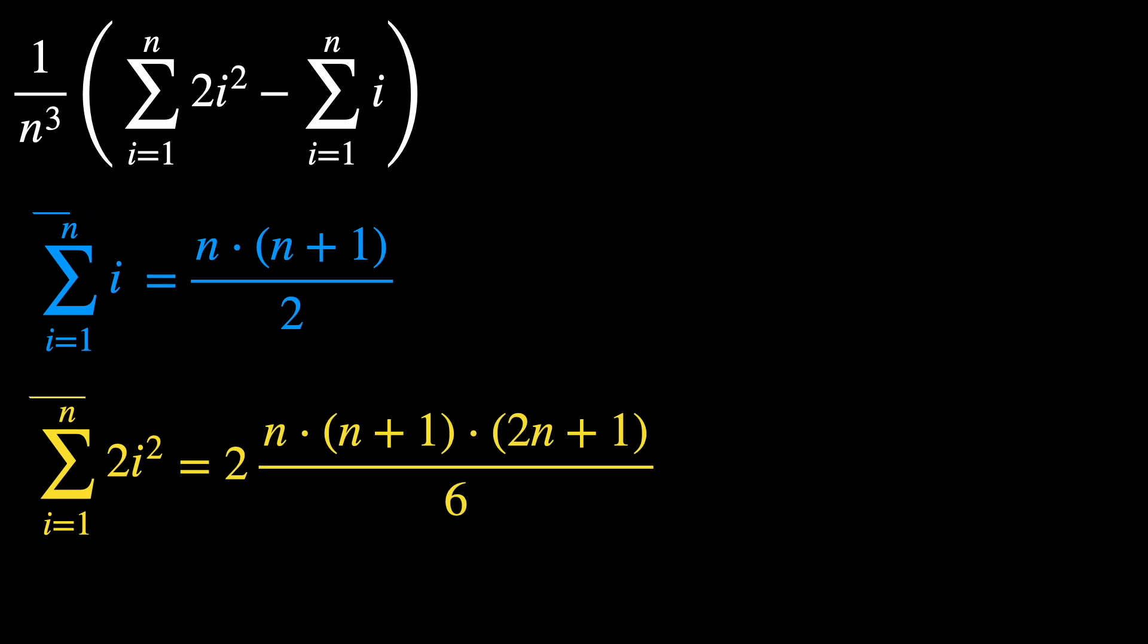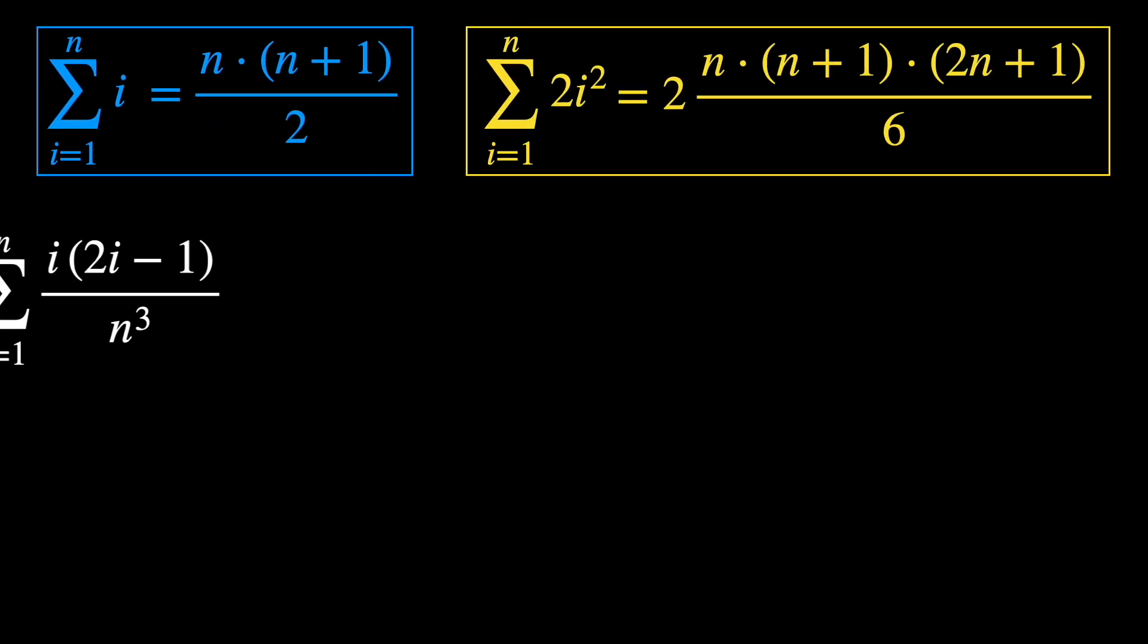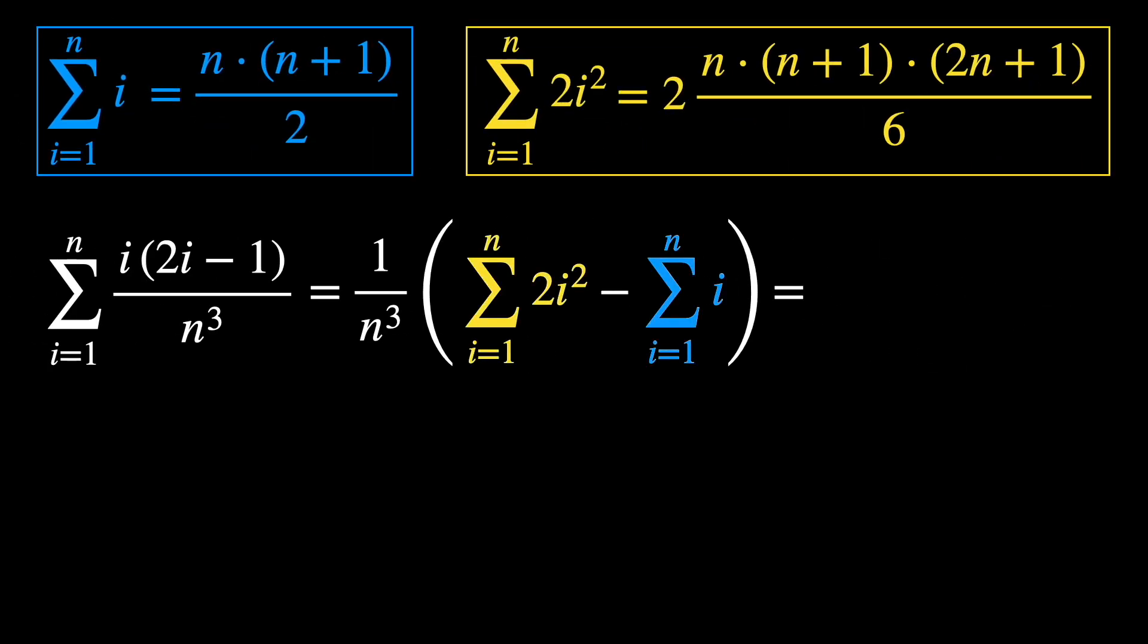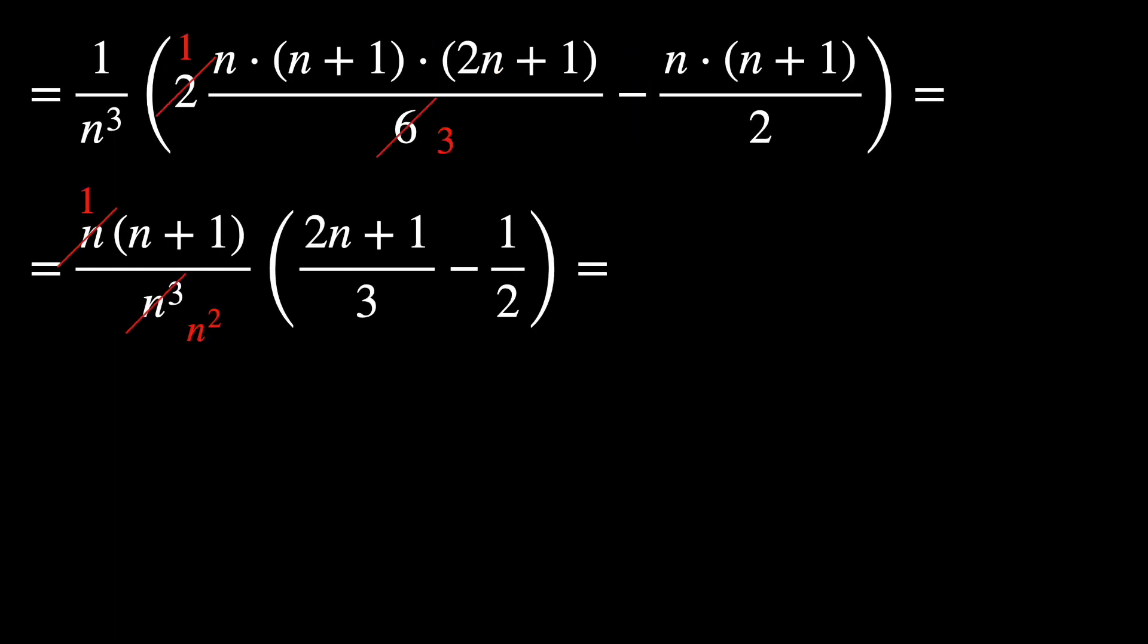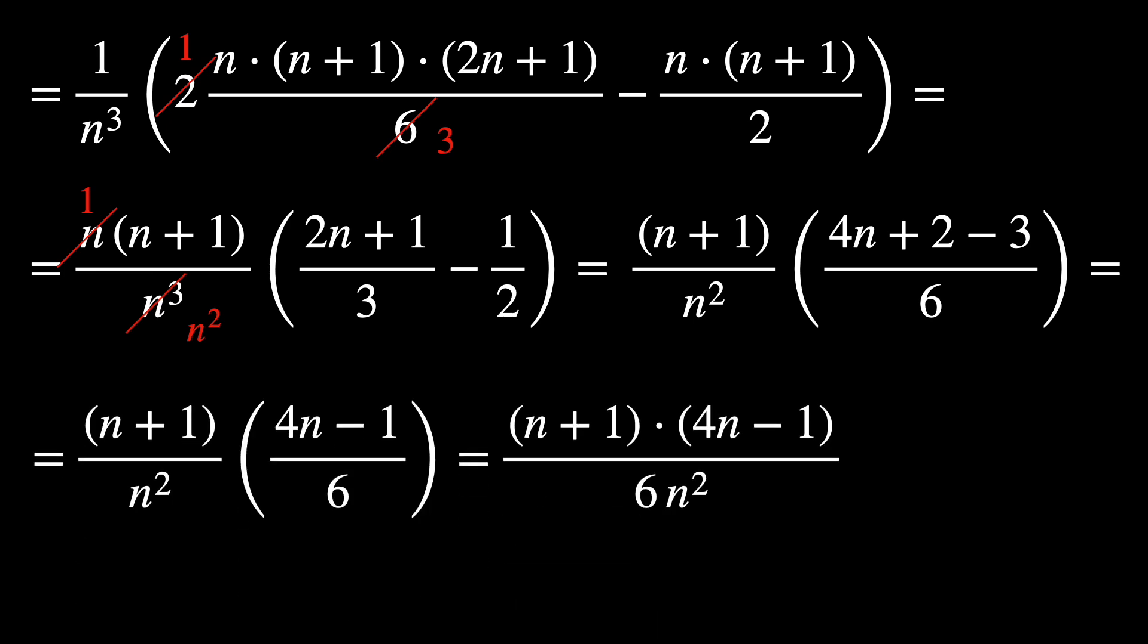Going back to our problem now, we can substitute them into the Riemann-Stieltjes sum. Working on the math here, we get (n+1)(4n-1)/(6n²).